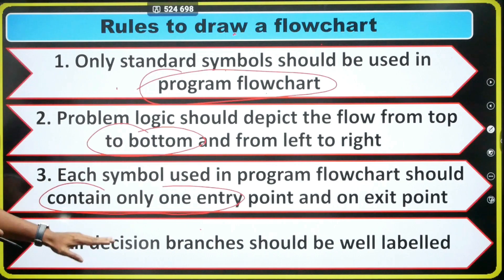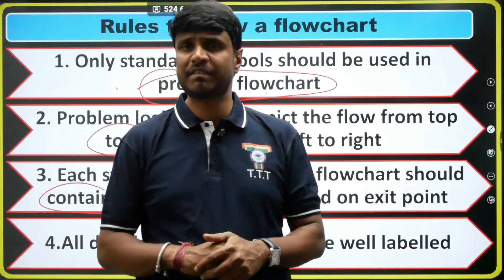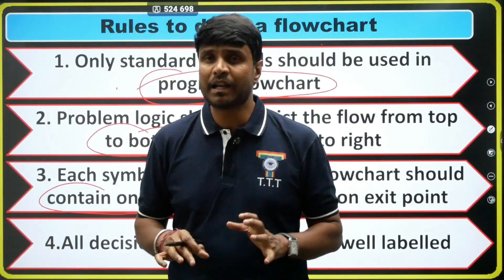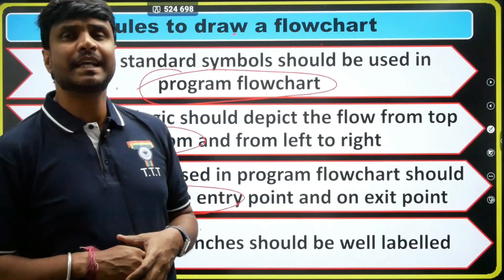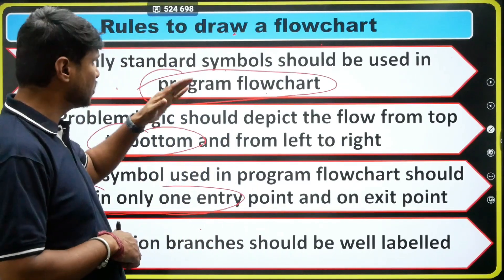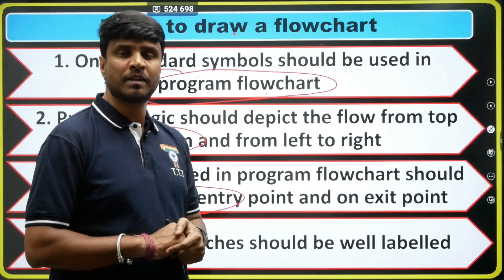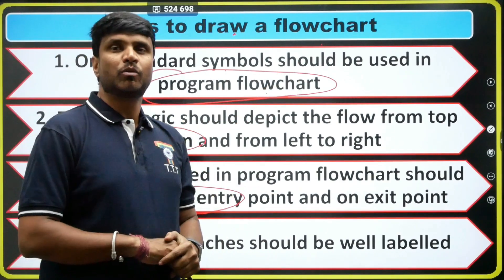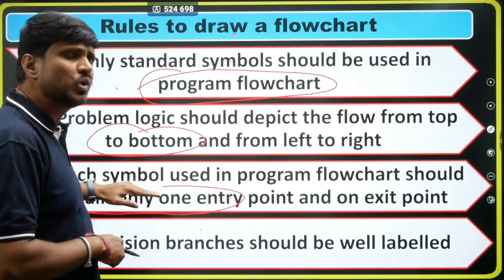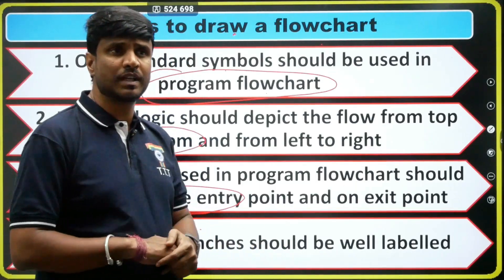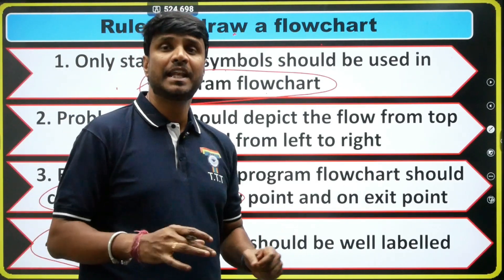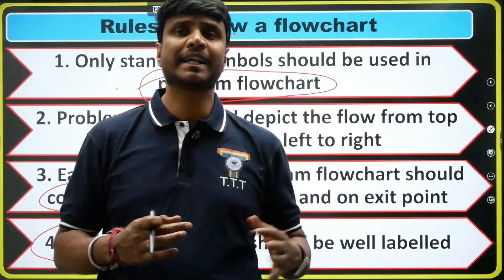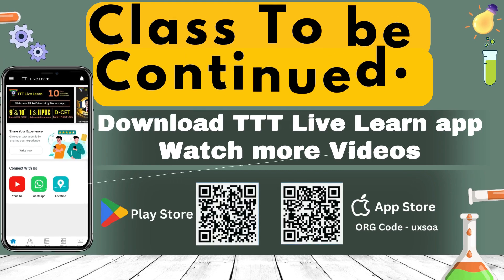The fourth rule is: all the decision branches should be well labeled. So to summarize the rules for drawing a flowchart — first, use only standard symbols; second, program logic from top to bottom and left to right; third, only one entry point and one exit point; fourth, all decision branches should be well labeled.